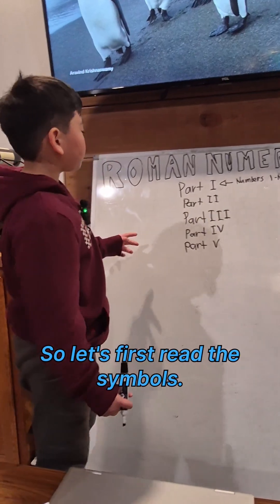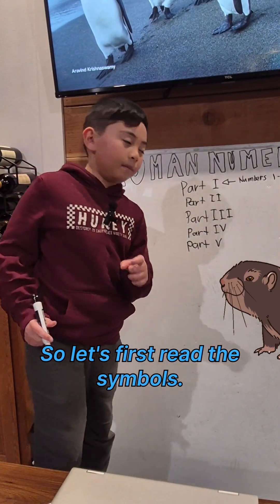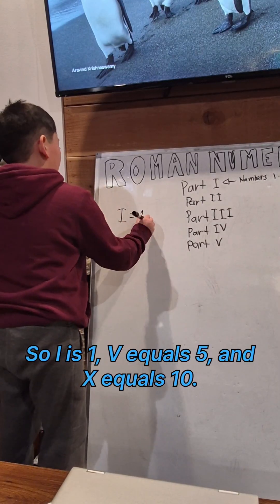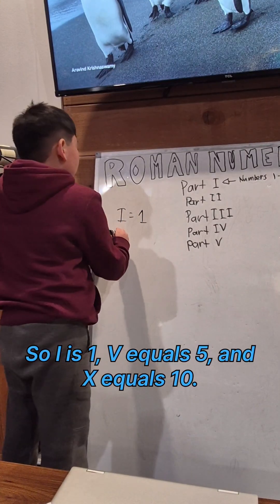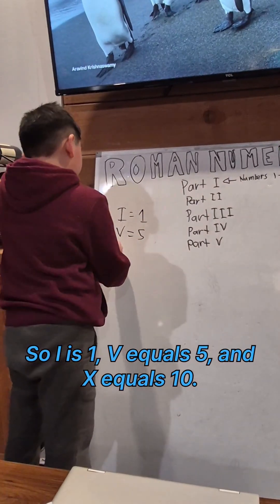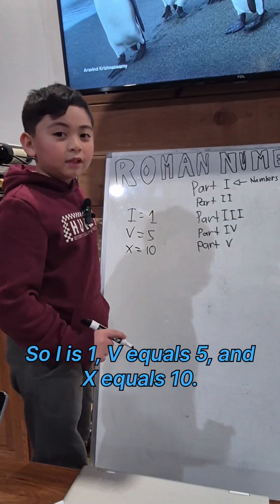First, we need the symbols. So I is 1, V equals 5, and X equals 10.